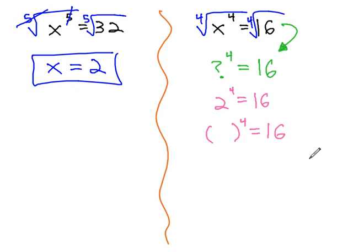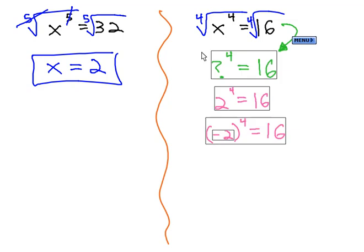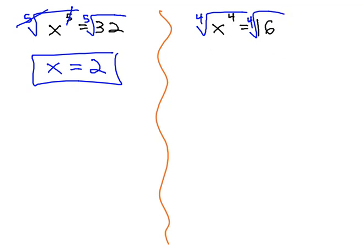There's also another value, negative 2. The even exponent gets rid of the negative, and then 2 to the fourth would be 16. So there's actually two possible results for the fourth root of 16.